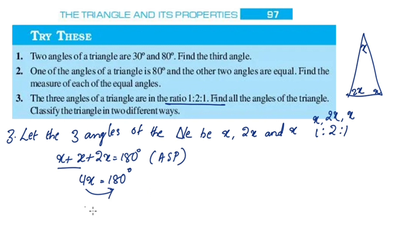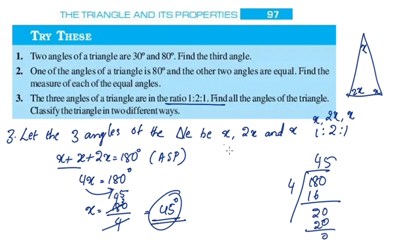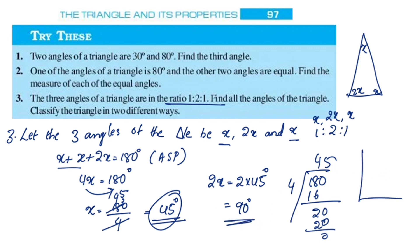x is equal to 180 divided by 4, which is 45 degrees. So x equals 45 degrees, and 2x equals 90 degrees, which is a right angle. So the angles of the triangle are 45, 90, and 45 degrees.